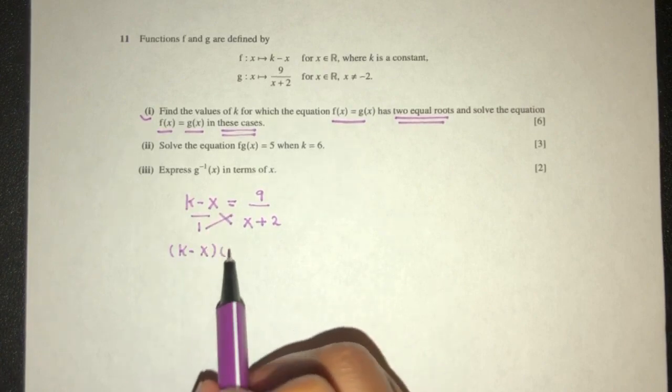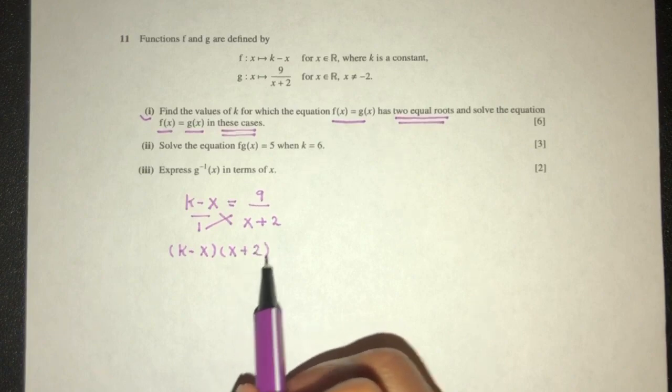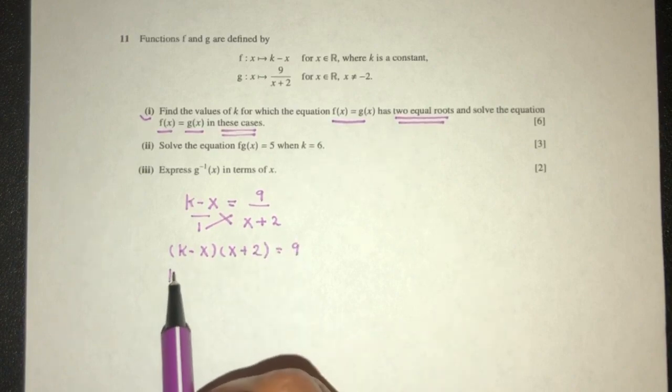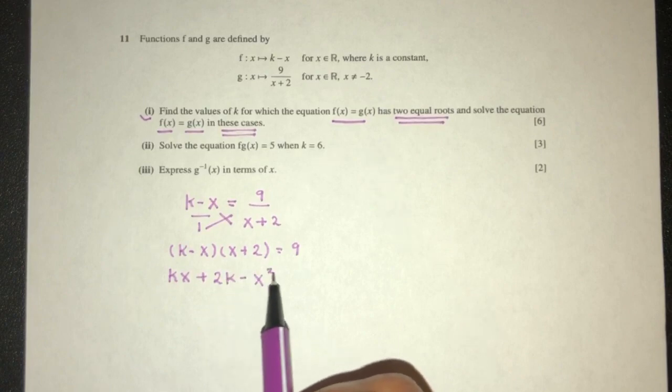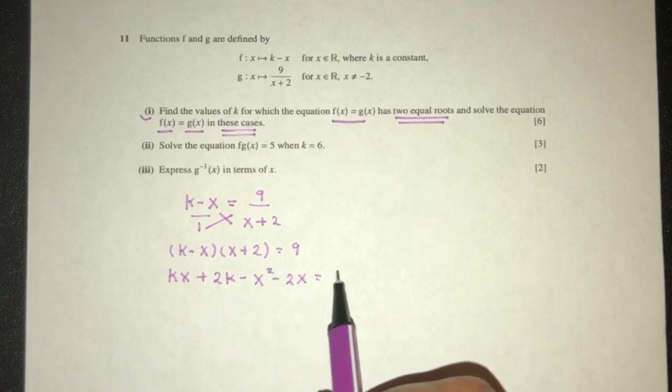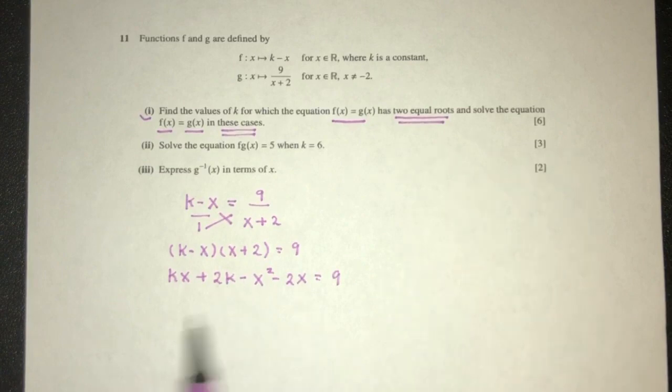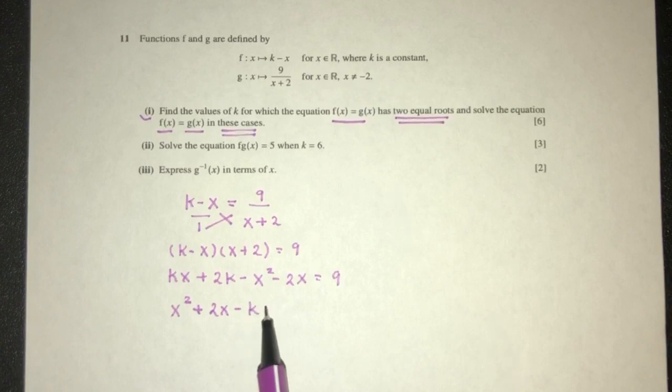So (k - x) times (x + 2) equal to 9. That will be kx + 2k - x² - 2x. Let's turn everything to one side. You will have x² + 2x - kx plus 9 - 2k = 0.